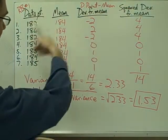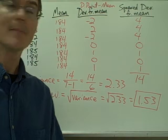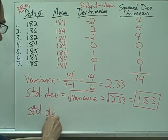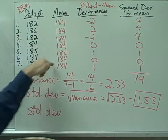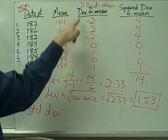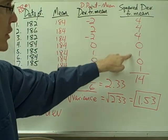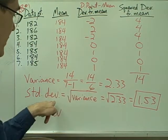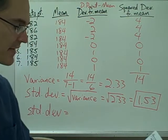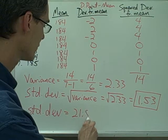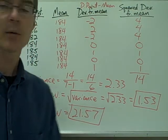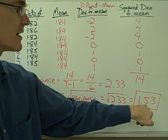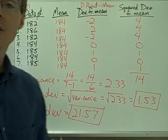If I perform the same calculation for rubber band number two — entering its data points, calculating deviations from the mean of 184, squaring them, summing, dividing by 6, and taking the square root — I get a standard deviation of 21.57. Just as we suspected, the standard deviation for rubber band one is much smaller than the standard deviation for rubber band two, confirming that rubber band two's data are much more spread out.